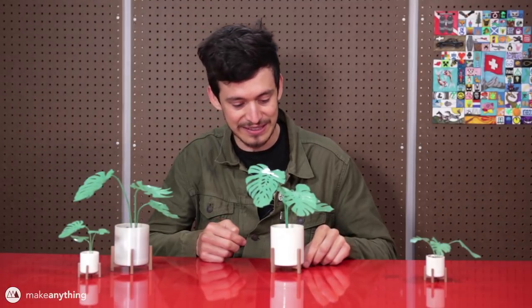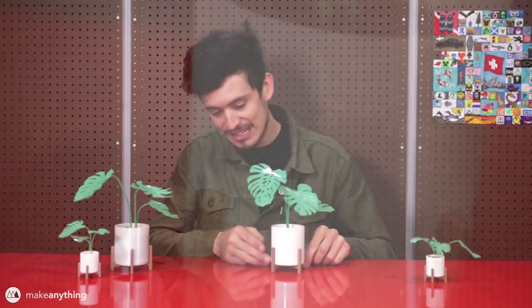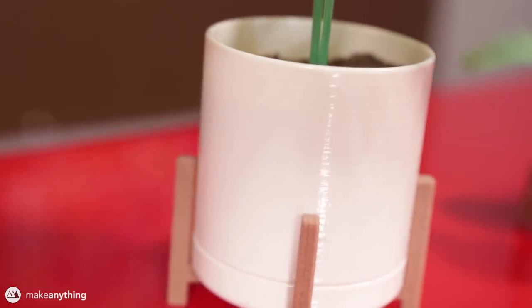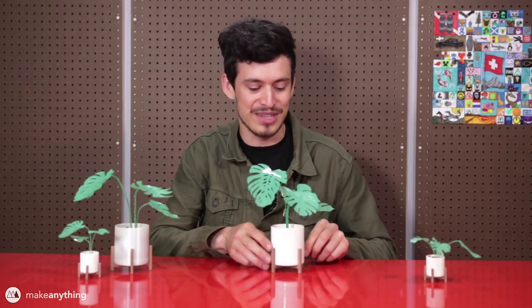So that worked out really well and then for the pot you can see it's nice and glossy and a lot of people who are a little bit in the know might think that it's an acetone smoothed ABS part.